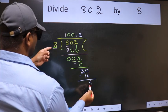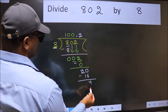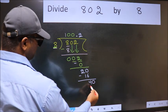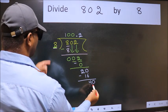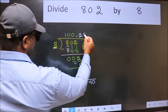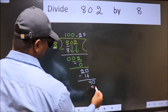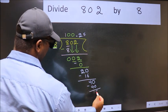4 is smaller than 8. We already have the decimal, so directly take 0, making it 40. When do we get 40 in the 8 table? 8 times 5 is 40. Now we subtract and get 0.